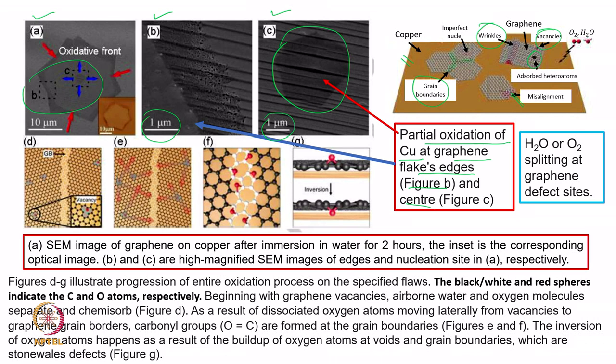At the graphene location, moisture can be adsorbed, leading to splitting of water molecules, giving H and OH, which creates more chances of corrosion. Figures D through G are also shown. Last time, we mentioned the inversion of an oxygen molecule; figure D through G demonstrate a complete oxidation process.